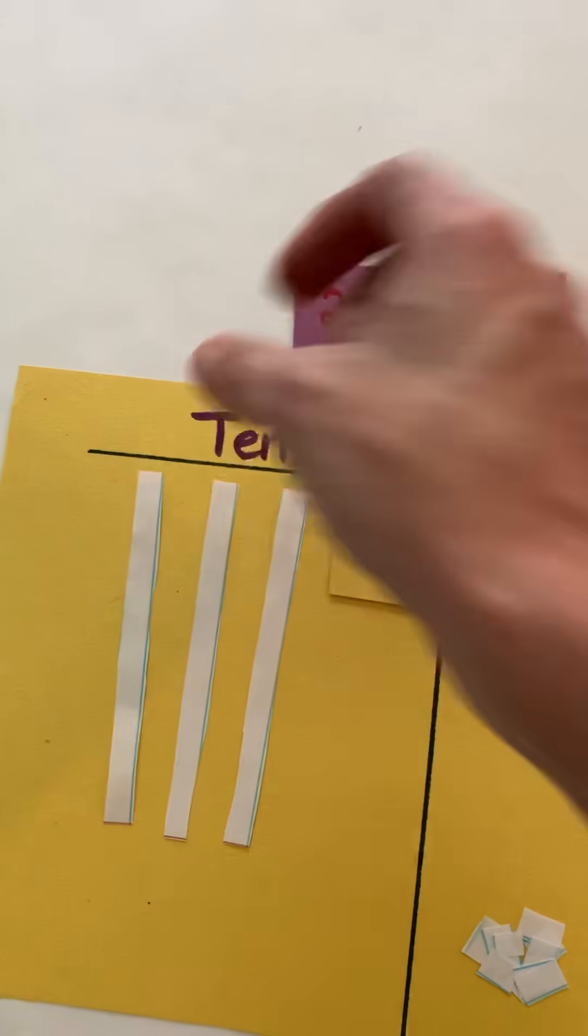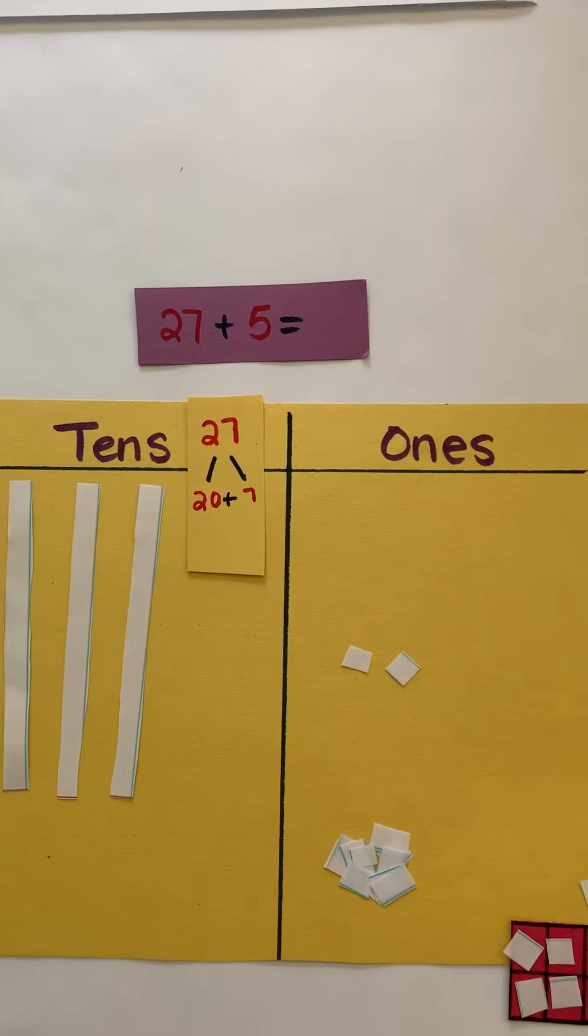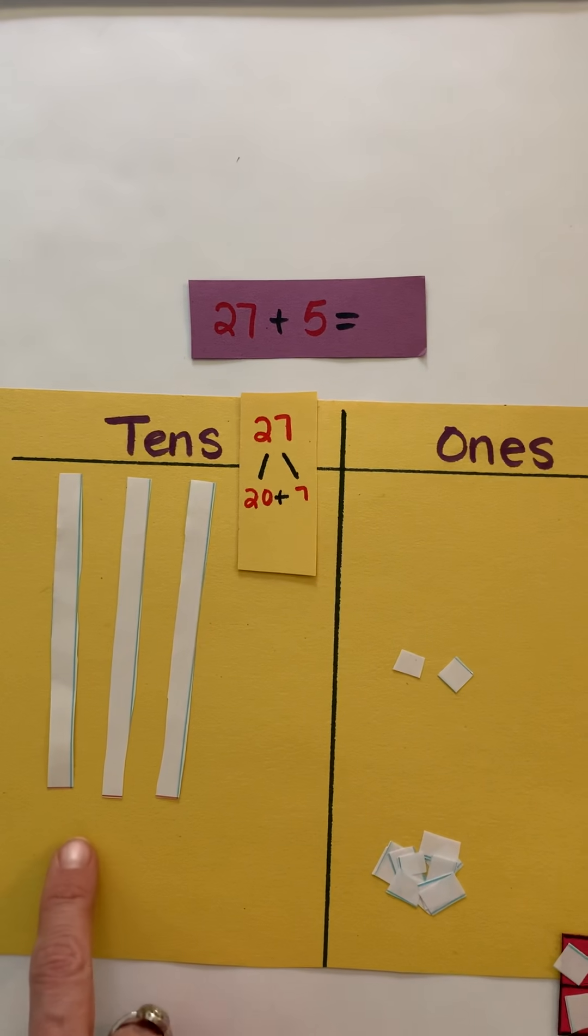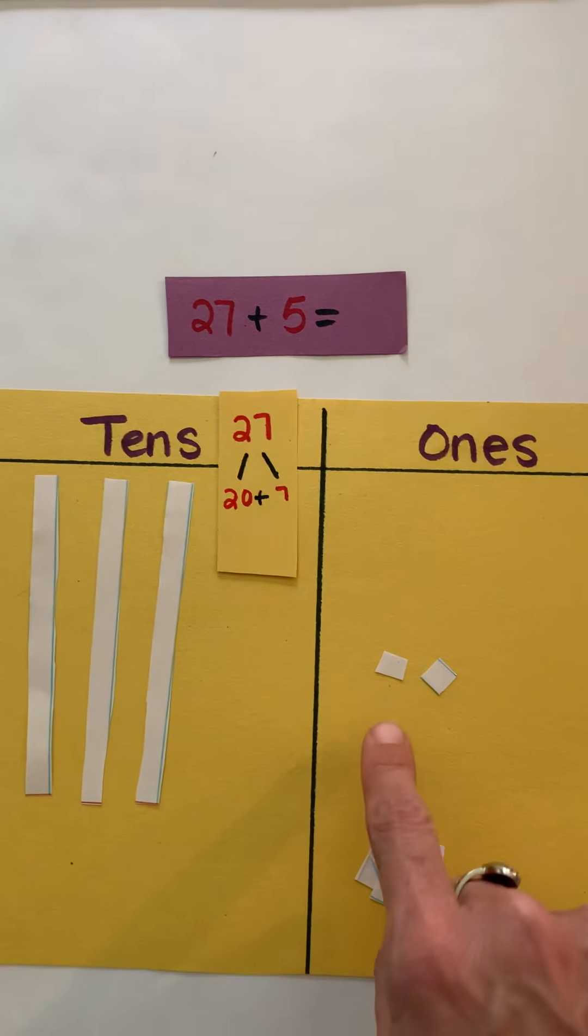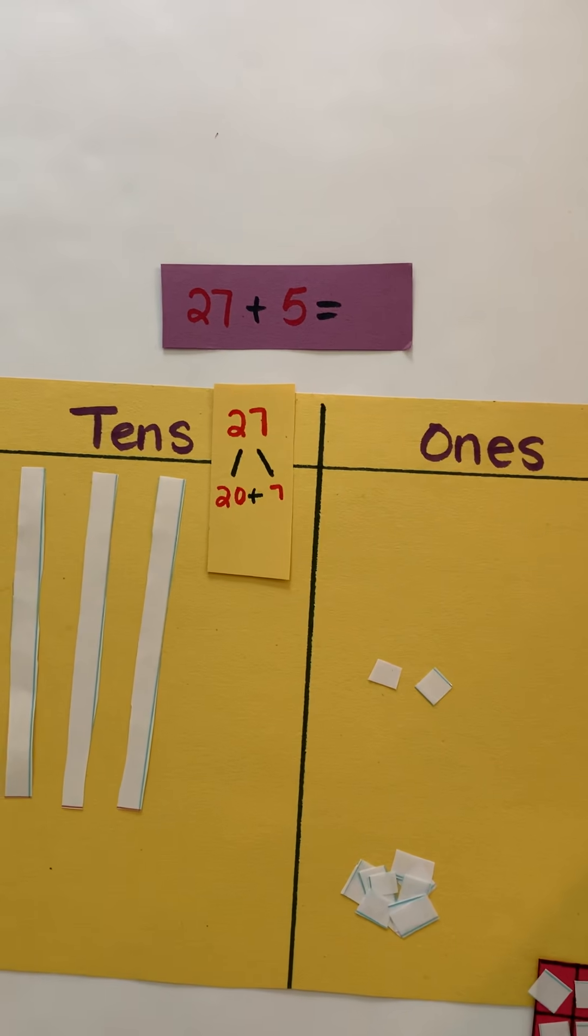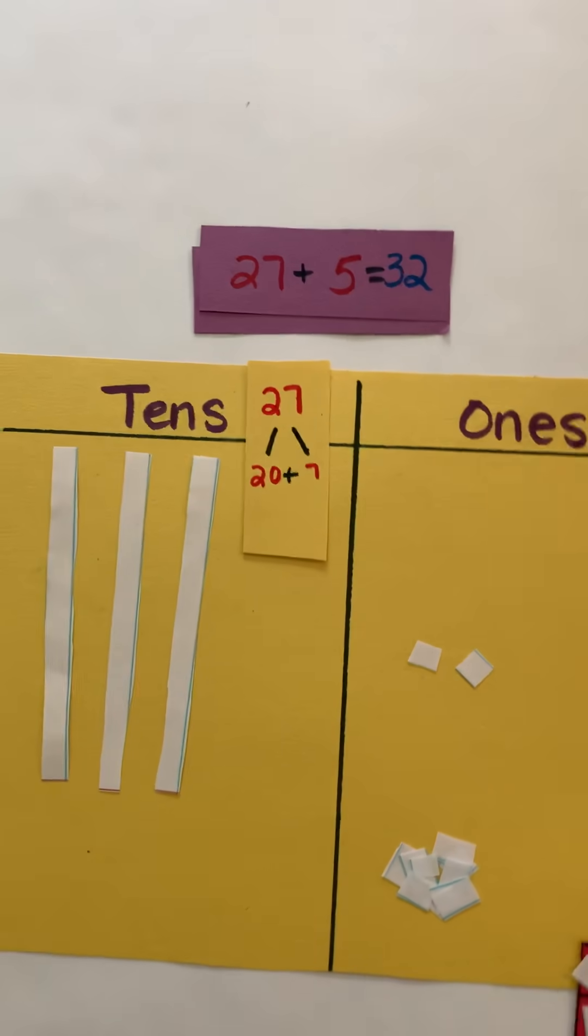I'm going to take these and realize I'm going to exchange those 10 ones for a ten and put it on my tens side. So now you can see that my sum is 10, 20, 30, 31, 32. So 27 plus 5 equals 32.